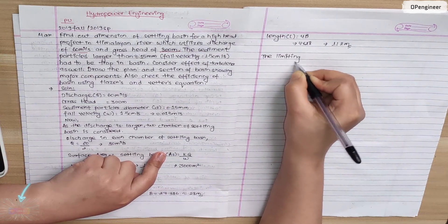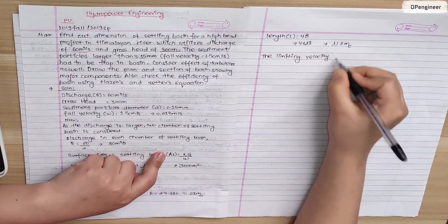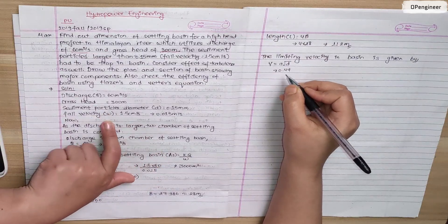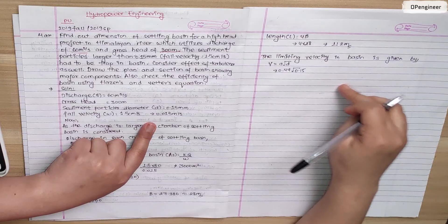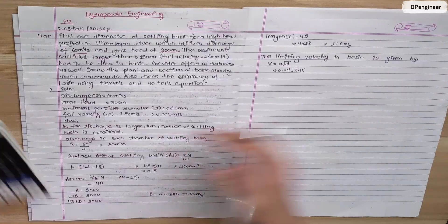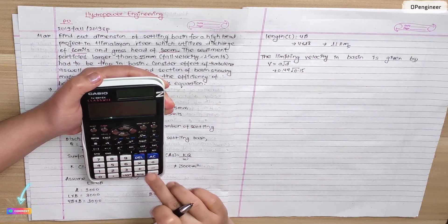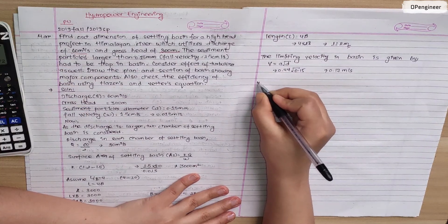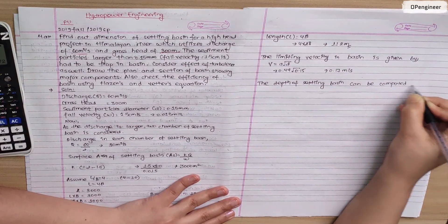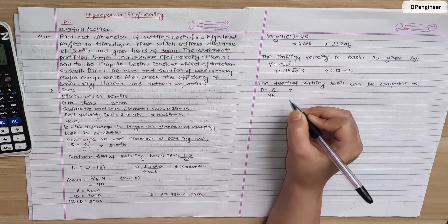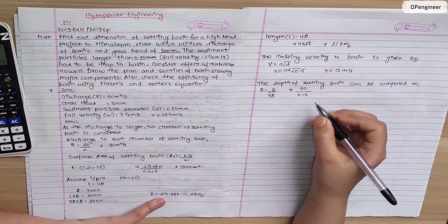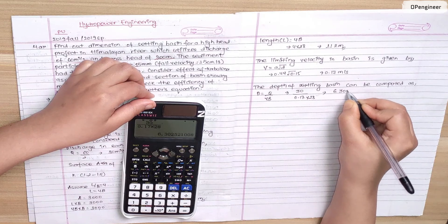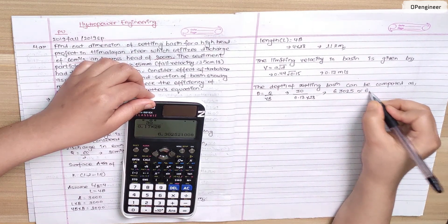Now we calculate the limiting velocity in the basin, given by V equals A divided by the square root of D, where A equals 0.44 and D equals 0.15 mm. So V equals 0.44 times the square root of 0.15, giving 0.17 meters per second. The depth of the settling basin is computed as depth equals q divided by (V times B), which is 30 divided by (0.17 times 28), giving approximately 6.3025, rounded to 6.5 meters.